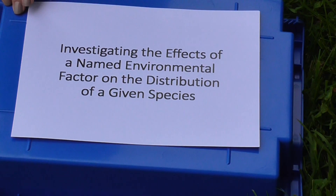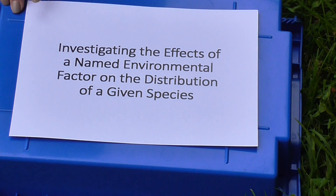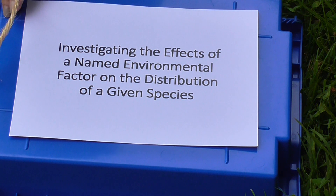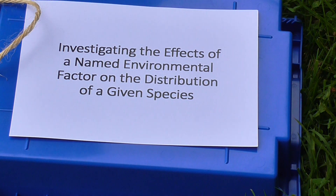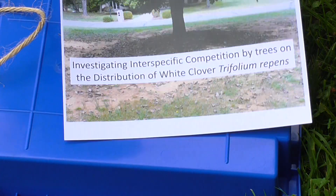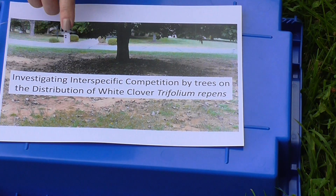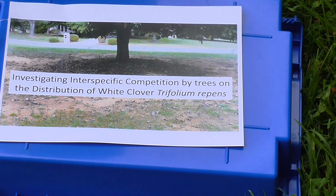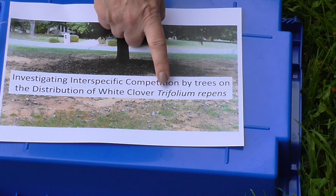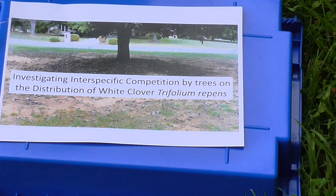I'm going to show you how to do one of the required A-level biology practicals. This is required for the full A-level, but not for the AS-level. It's an investigation into the effects of a named environmental factor on the distribution of a given species. What we're actually going to investigate today is the effects of inter-specific competition by trees on the distribution of white clover, which is Trifolium repens — a very common grassland plant species in this country.